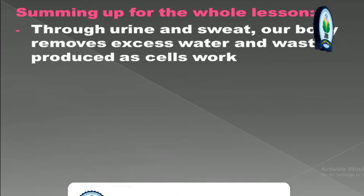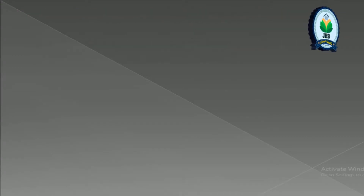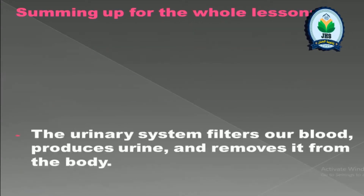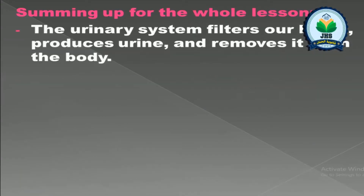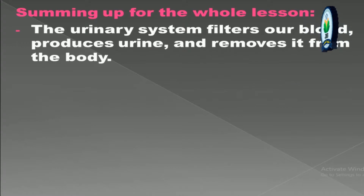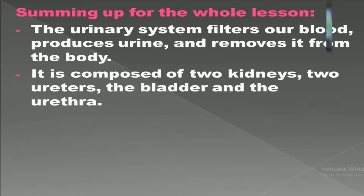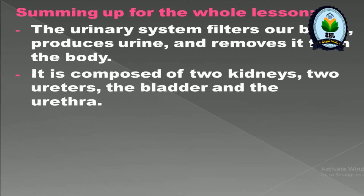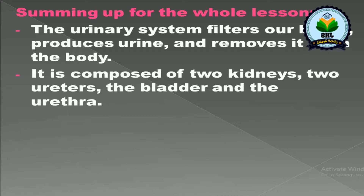Summing up the whole lesson: through urine and sweat, our body removes excess water and waste produced as cells work. The urinary system filters our blood, produces urine, and removes it from the body. It is composed of two kidneys, two ureters, the bladder, and the urethra.